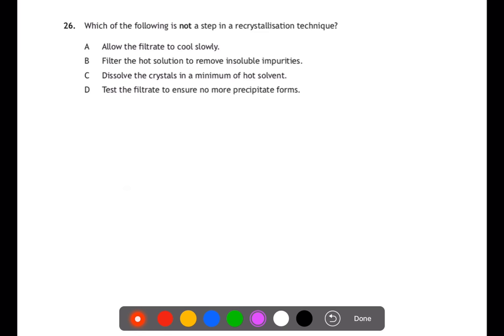Question 26. Which of the following is not a step in the recrystallisation technique? For recrystallisation, you need to dissolve your crystals in a minimum of hot solvent. Whilst it's still hot, you need to filter it to remove any insoluble impurities. And once you've done that, you let your filtrate cool down slowly. At no point do you have to test your filtrate to ensure that no more precipitate forms. So D is your answer.